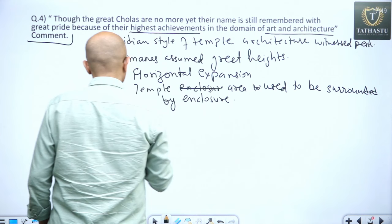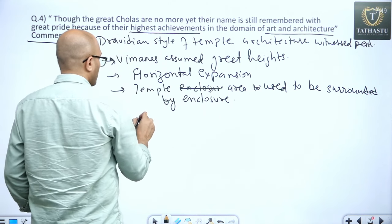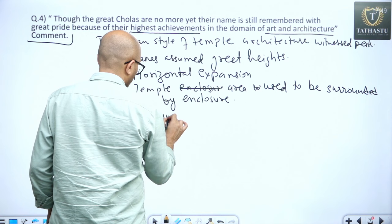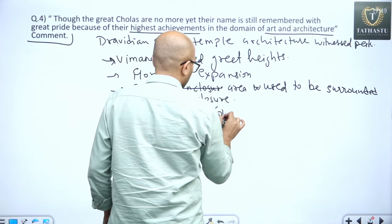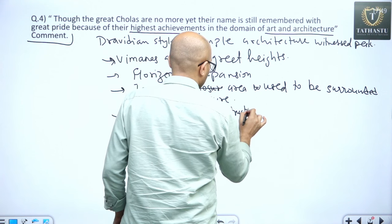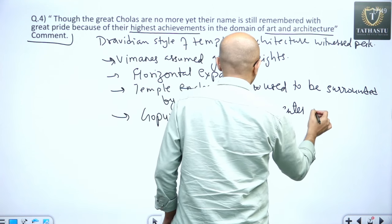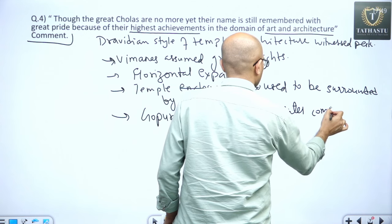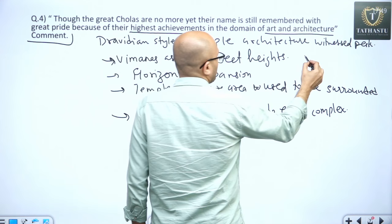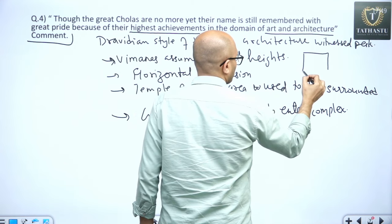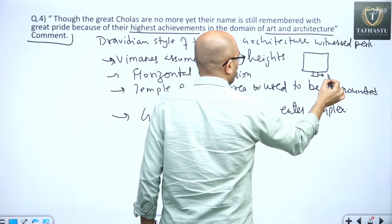Now these walls, now how you will enter, they started making Gopuram, now Gopuram they started to construct, to enter temple complexes, temple complex and the enclosure is enclosed, this is the enclosure, this is the enclosure, so here entry is what will happen, here will be Gopuram.